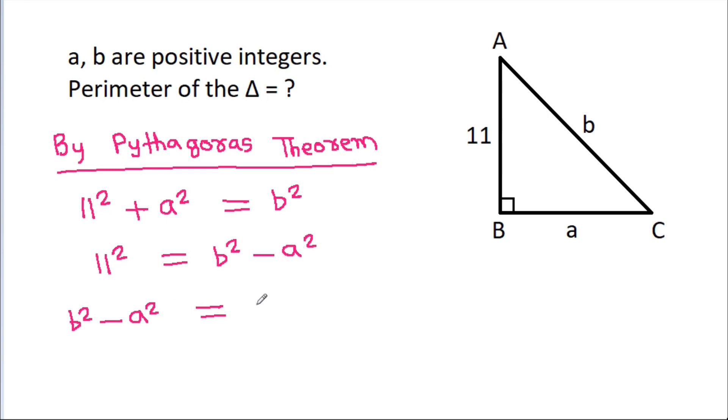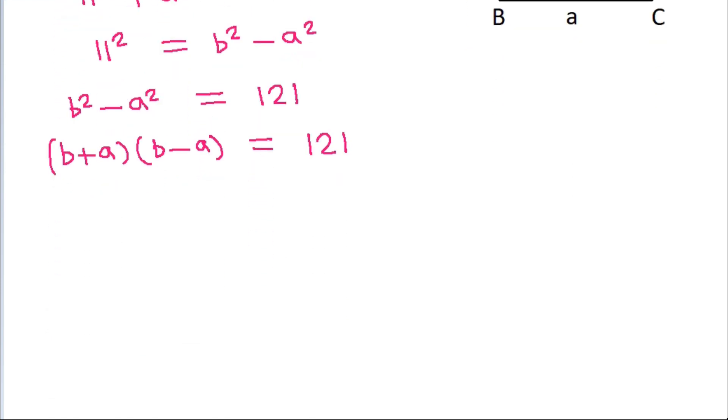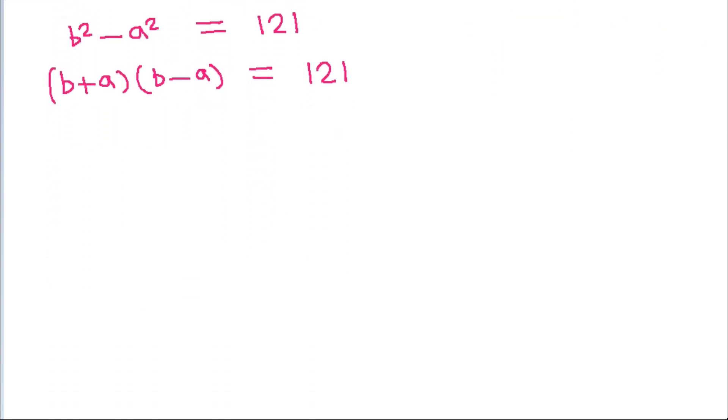11² is 121, and b² - a² = (b+a)(b-a) = 121. Now 121 can be factored as 121×1 or 11×11, and a and b are positive integers.